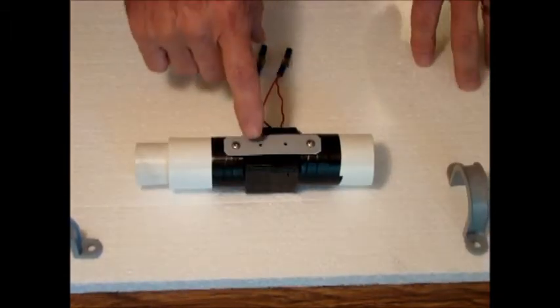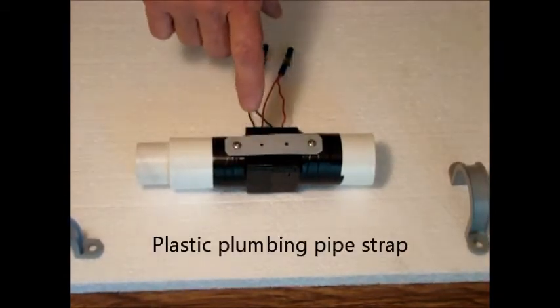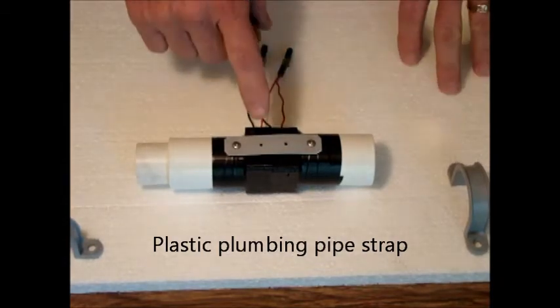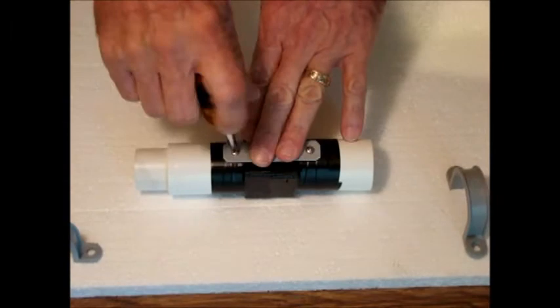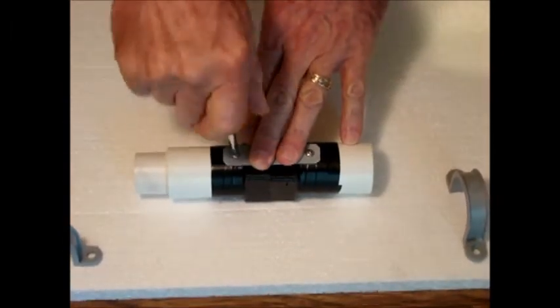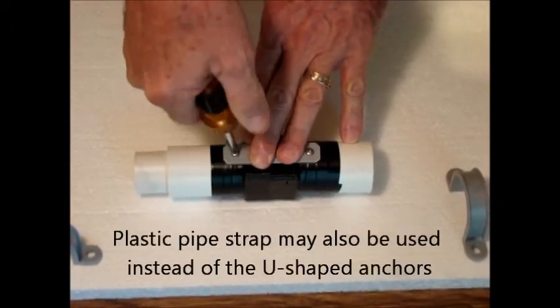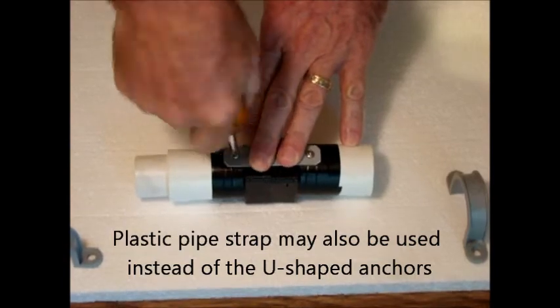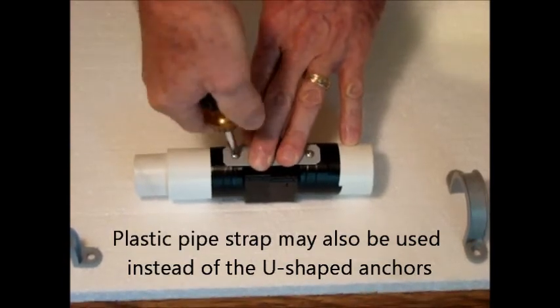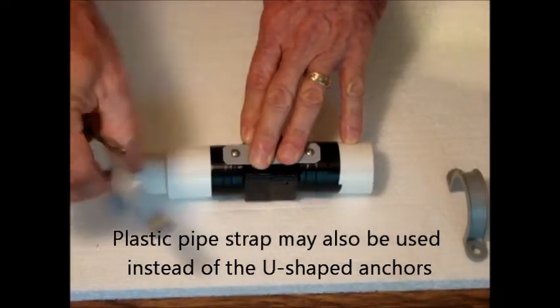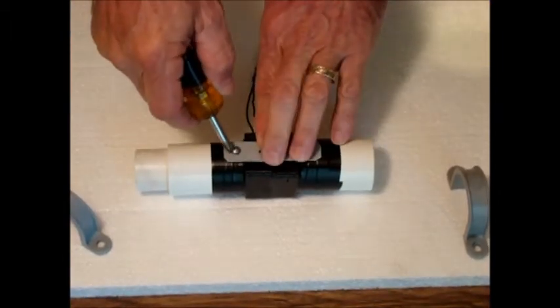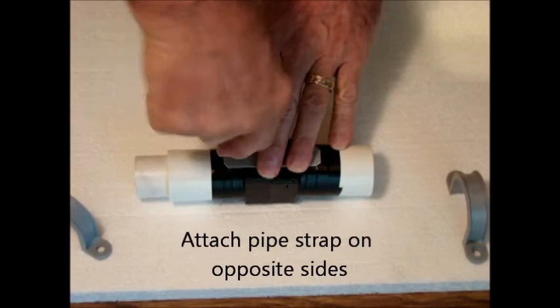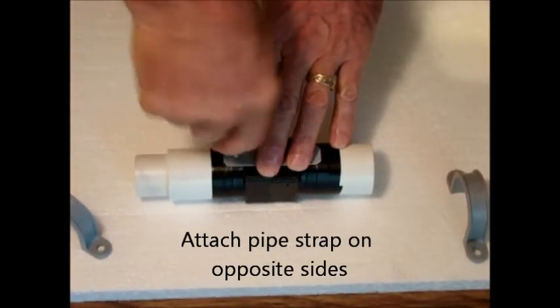You will also need a small plastic pipe strap. You can find that in the plumbing department. I'm going to go ahead and remove it. It basically holds this together. If you were going to simply insert this in line somewhere and not anchor it to a bulk head with these U-fittings, then you would need to put a piece of pipe strap on two sides. If it's anchored to a bulk head, you only need to put it on the side that's facing outward.